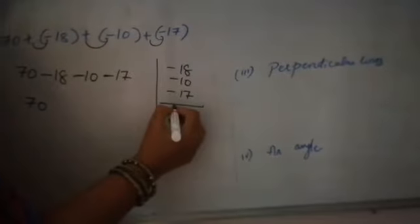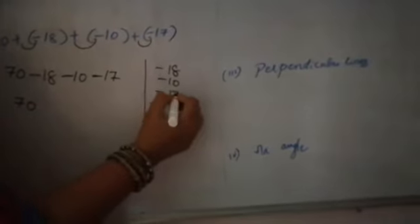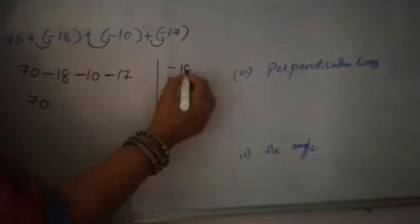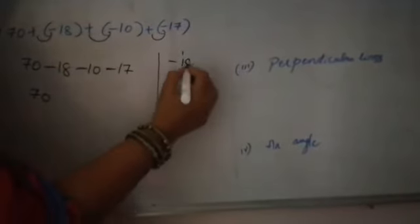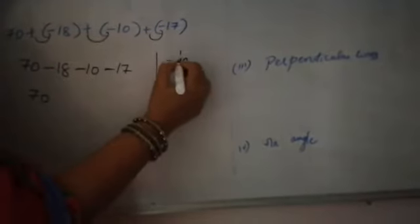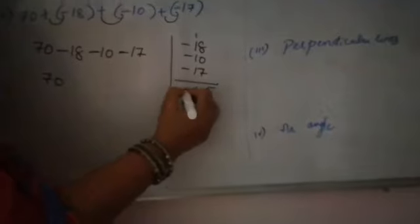All the numbers are along with the sign of minus. So add and give the sign of minus. 7 plus 8 is 15. Minus 98.